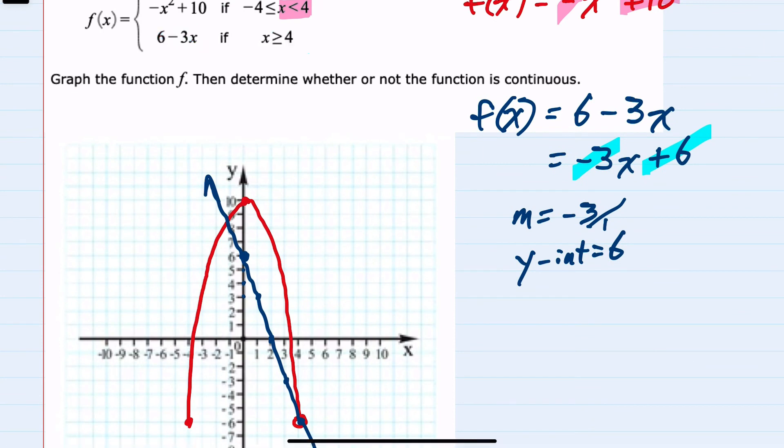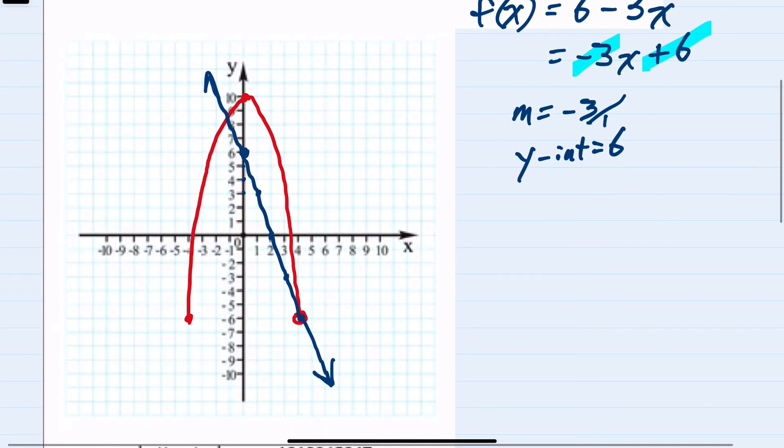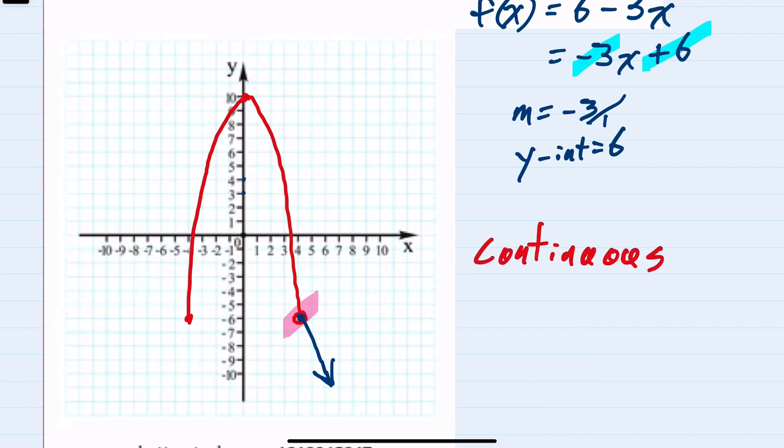However, since we only have this function where x is greater than or equal to 4, looking at the graph, this would just be to the right of x equals 4. So again, removing everything to the left of 4, we have graphed both pieces, and since they connect at the same point, then yes, this is continuous.